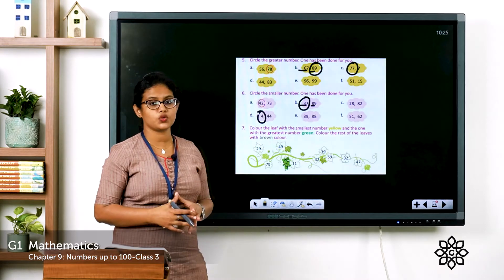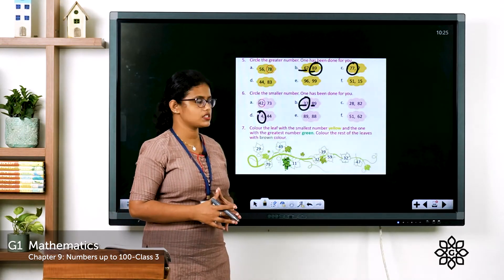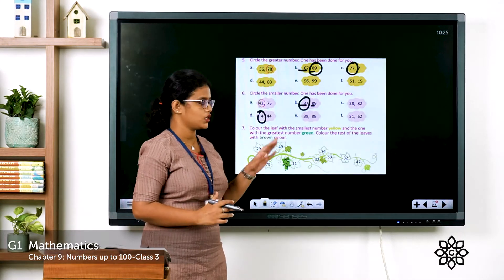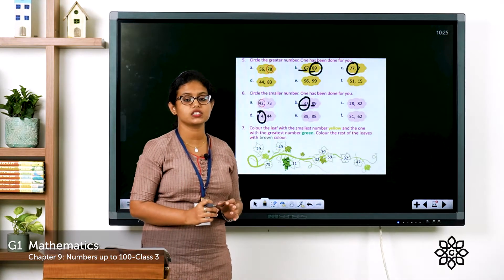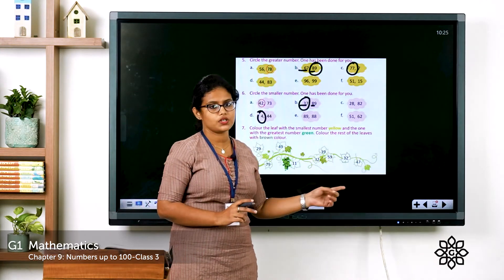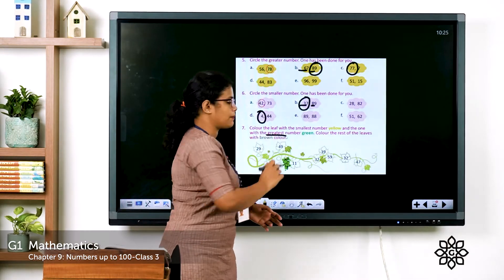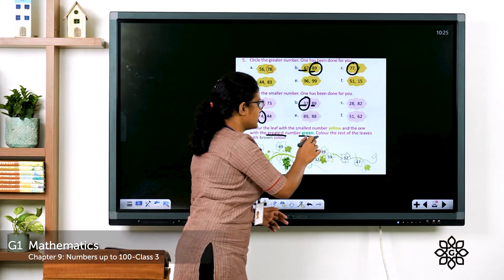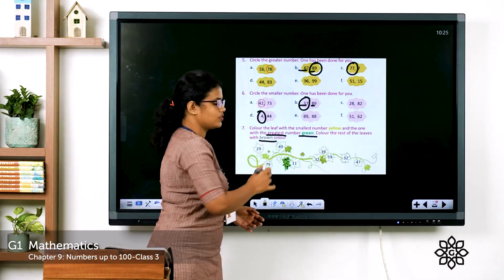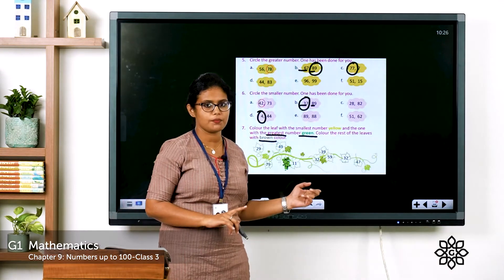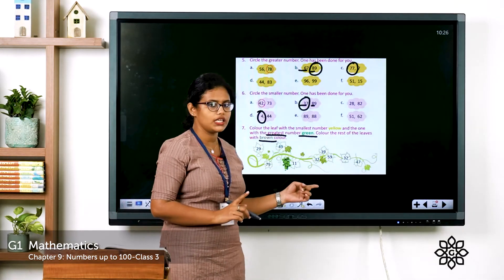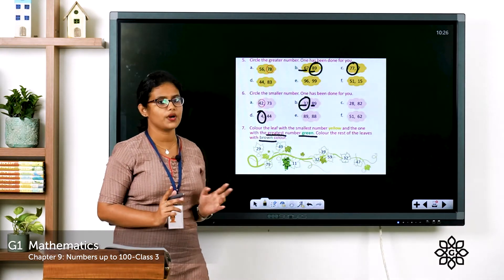Seventh one: here you can see leaves. Colour the leaf with the smallest number yellow, then find the greatest number and shade it green, then colour the rest of the numbers brown.